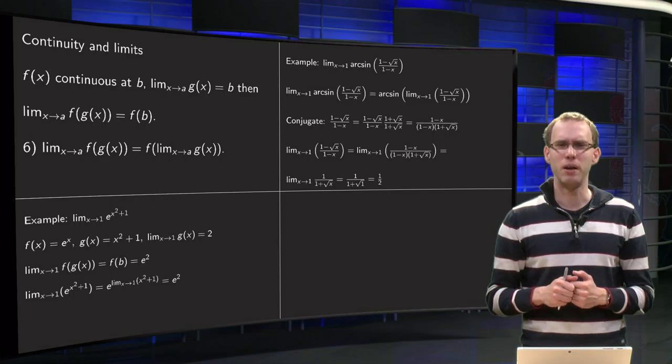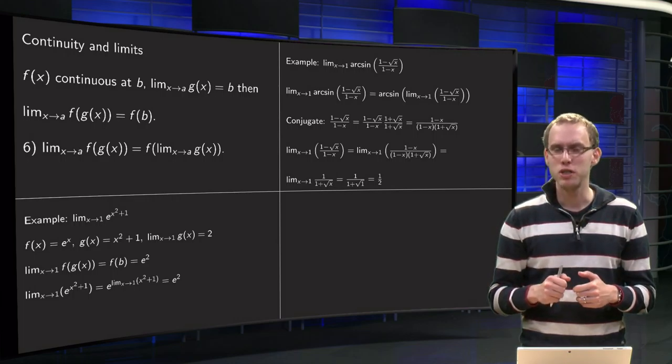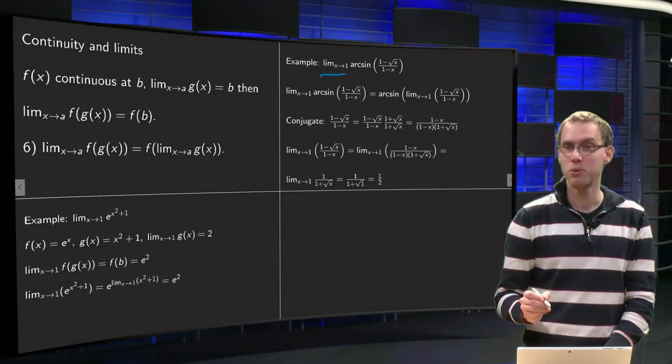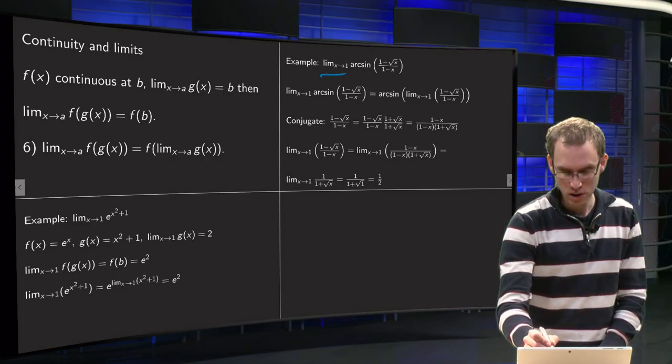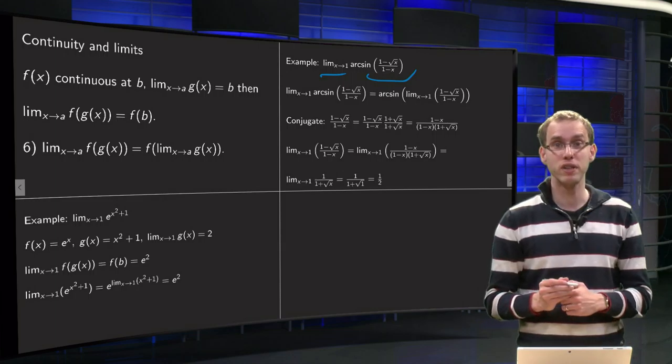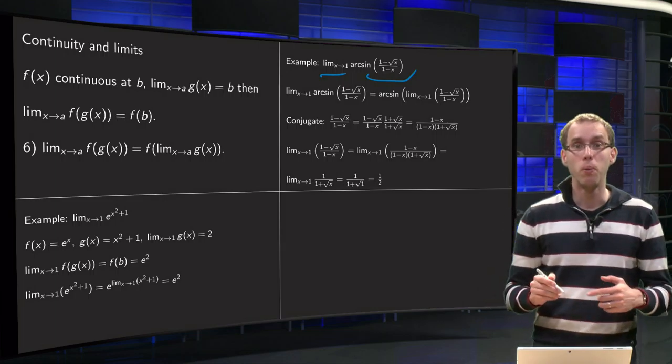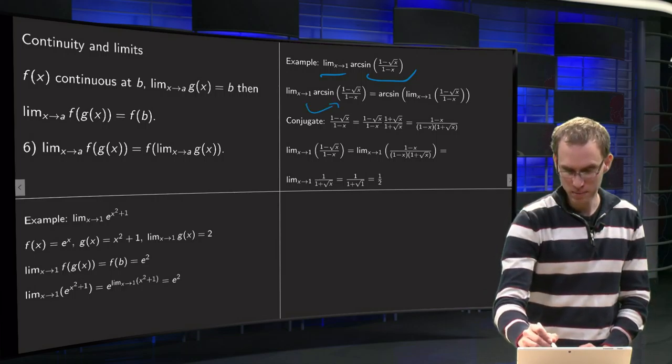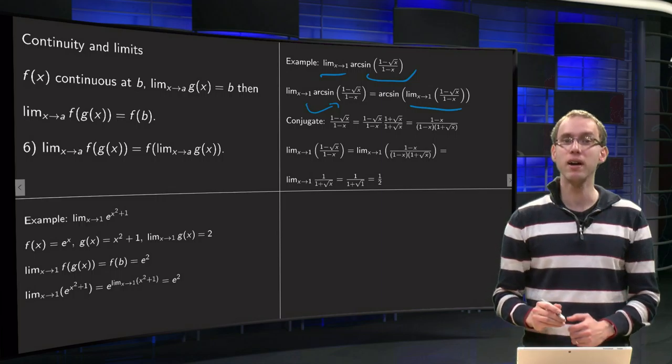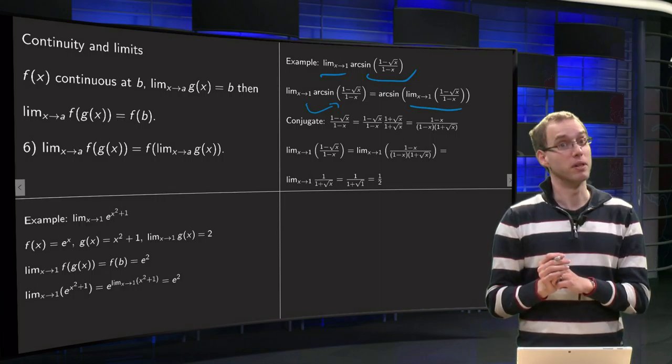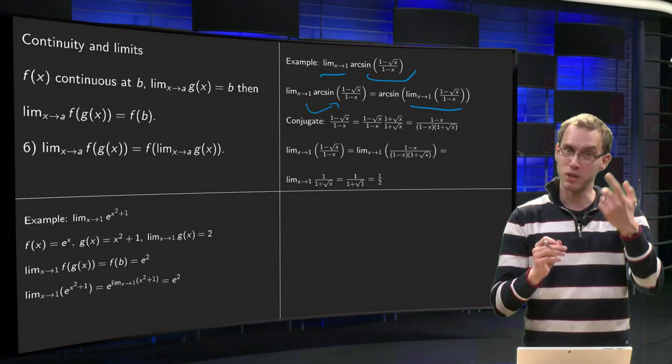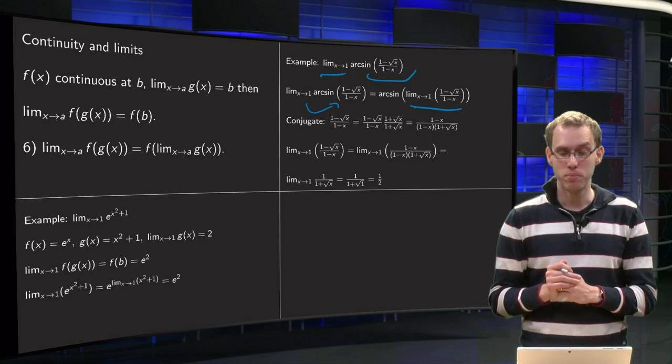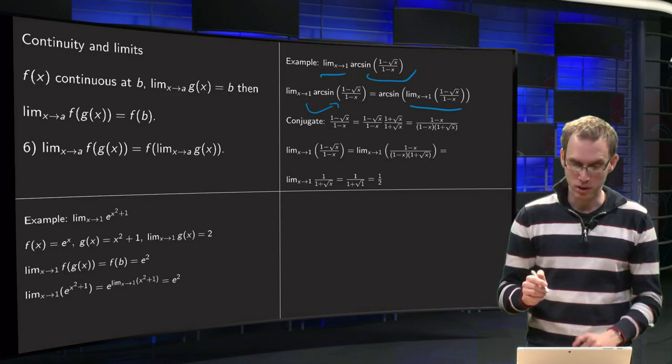Well, let's do a limit which is a little bit harder. Take x to 1 in the function arcsine, so that is already a horrible function, of this expression: (1 minus square root of x) over (1 minus x). Well, arcsine is a continuous function, so we can take the limit x to 1 in. So then we are here, and now we need to be a bit careful, because you cannot just plug in 1, because you will get 0 over 0, which is undefined. So we need to be a bit more careful there, but we can use our conjugate trick.